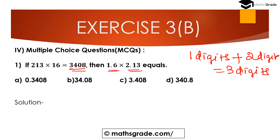So we have to move the decimal point 3 places to the right in 3408. Moving 3 places to the right gives us 3.408. So the answer is 3.408 — option C is the correct option. So 1.6 multiplied with 2.13 equals 3.408, and option C is the correct answer.